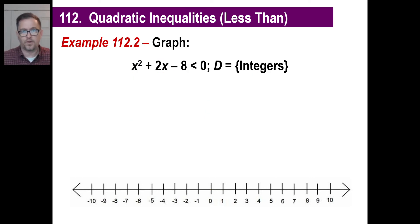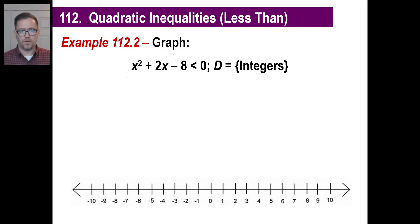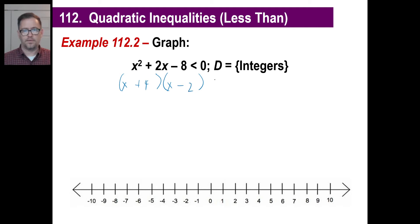Let's try another one. Notice it's a trinomial, and it is factorable. Which two numbers multiply to give negative eight and add to give positive two? Here are the numbers: x and x. We're looking for positive four and negative two — positive four times negative two gives negative eight, and positive four plus negative two gives positive two. So we factor it as (x plus four)(x minus two) less than zero.